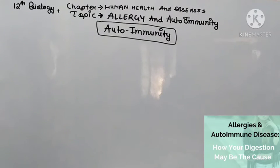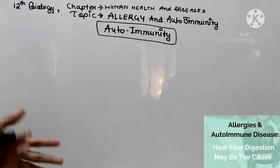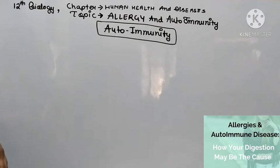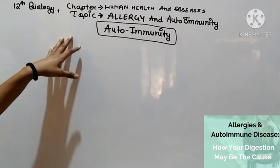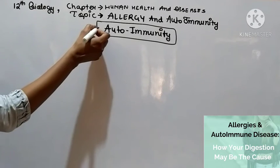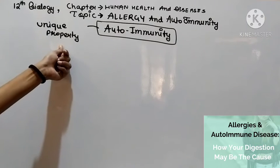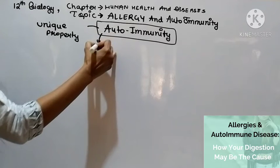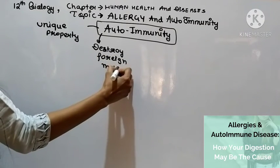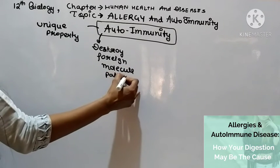Next we have autoimmunity. It is the unique property of our immune system that always destroys foreign molecules or even pathogens. The immune system recognizes what enters the body and checks whether it is harmful or not. This is a very unique property of our immune system — that it always destroys foreign molecules or pathogens.